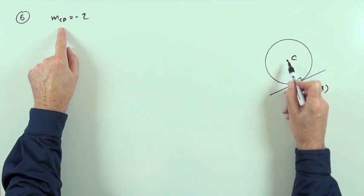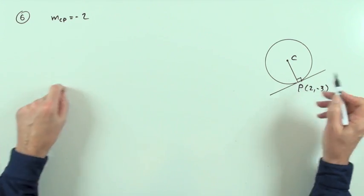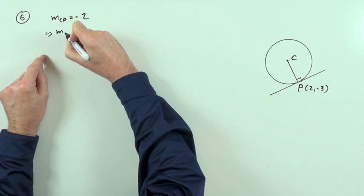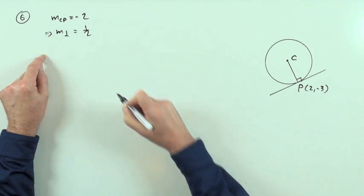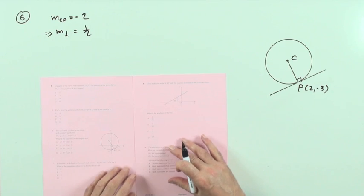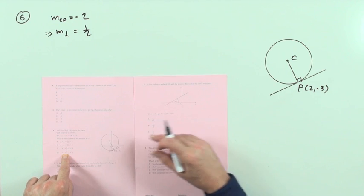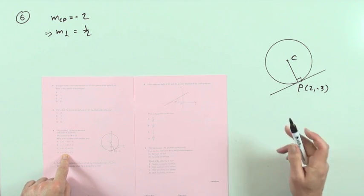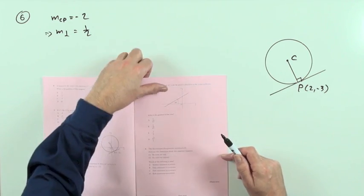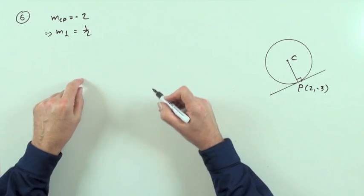So if the gradient of the radius is negative 2, the gradient that you're looking for, the perpendicular gradient, is going to be a half. That's obviously enough to select it because two of them got a half, and then you know you're going to use the formula Y minus B. So it should be Y minus, and that alone selects it. I'll just go through it all. What would it work out like?